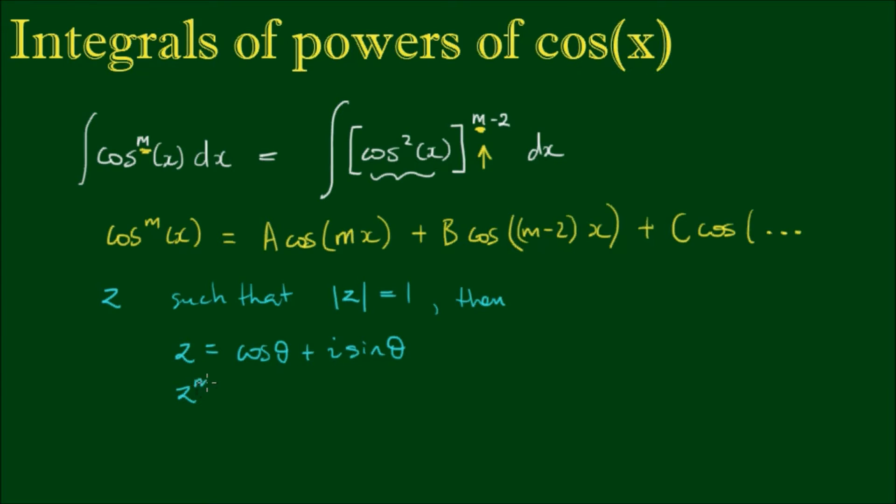Now if we raise z to the mth power, then by De Moivre's formula we can write (cosine theta plus i sine theta) to the mth power as equal to cosine of the mth multiple of the angle plus i times sine to the mth multiple of the angle. And as you can see, this is the most efficient power reducing formula because we've taken something to the mth power down to a single power in just one step.